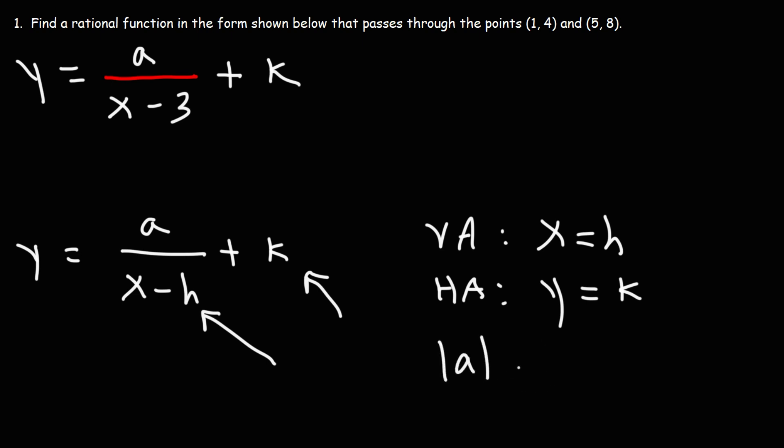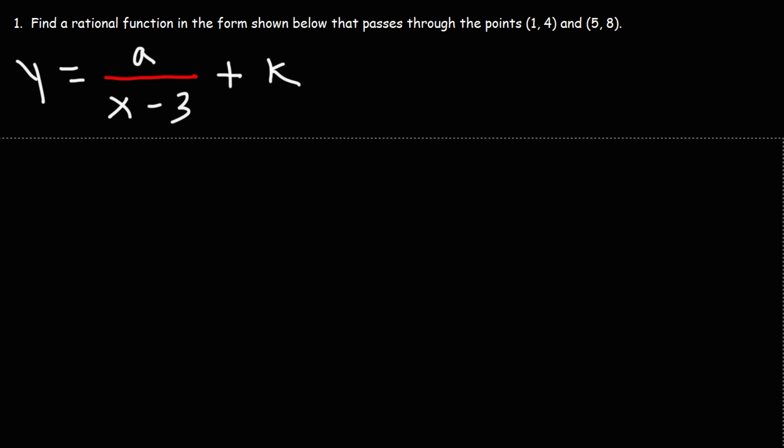If the absolute value of a is greater than 1, then the graph is going to stretch. If the absolute value of a is between 0 and 1, if it's small, then it's going to shrink. And if a is negative the graph is going to reflect across the x-axis. So those are some properties that relate to reciprocal functions in that form.